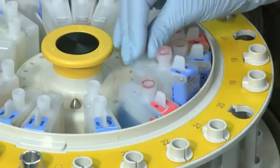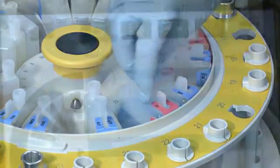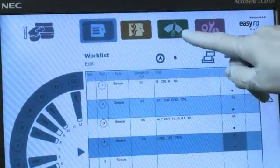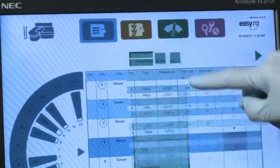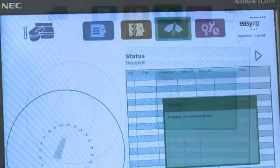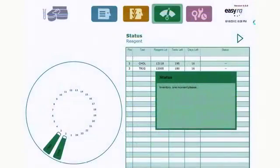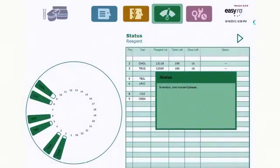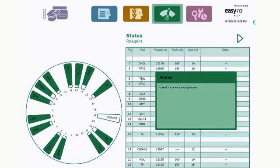Simply place a smart reagent wedge on the analyzer, and EasyRA identifies reagent locations, number of samples remaining, sample volumes, and expiration dates. Two-way communication between the analyzer and reagent wedges allows for continuous updating, providing real-time inventory control.